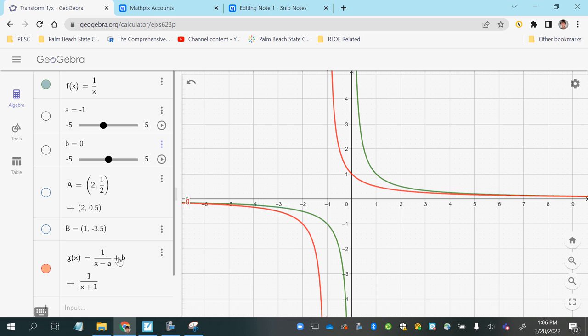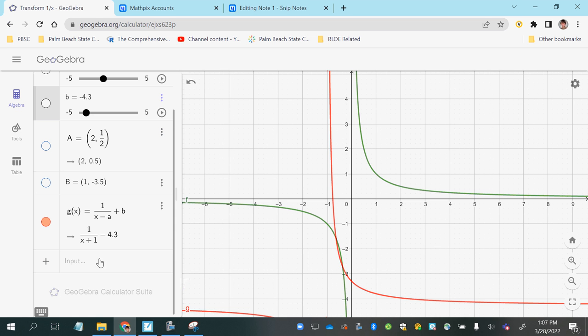Now I want to shift it down 4 units. So I'm going to move the b value towards negative 4 and you can see that as I move towards negative values, it is shifting down. So when it comes to shifting vertically, the sign of the value that's being added onto the function is true to the direction it's going to be moving.